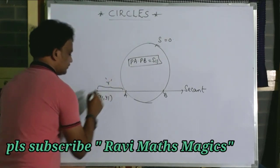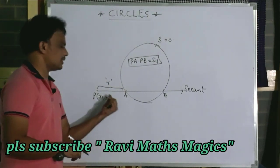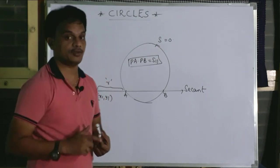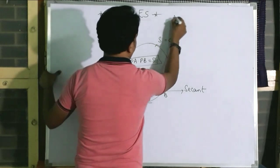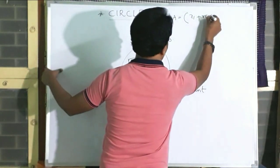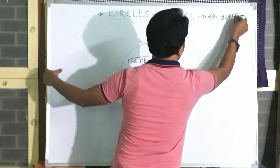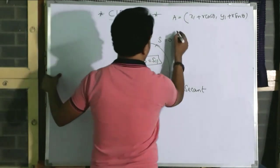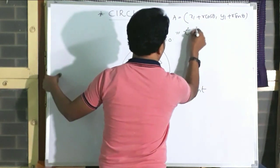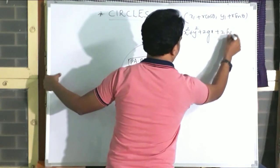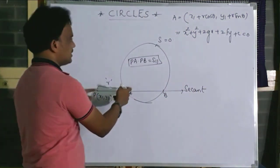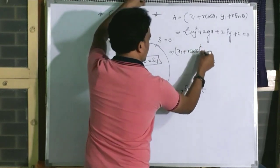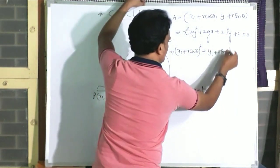Let us take the distances R, with this line making an angle theta with the positive direction of the x-axis. By using our parametric equations, the point A is (x1 + R cos θ, y1 + R sin θ). The point A lies on the circle. Substituting, we get (x1 + R cos θ)² plus (y1 + R sin θ)² plus 2g(x1 + R cos θ) plus 2f(y1 + R sin θ) plus C equals 0.